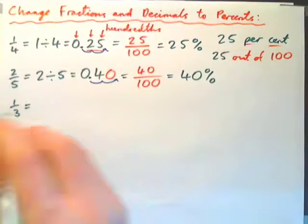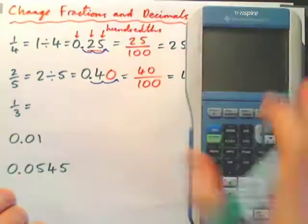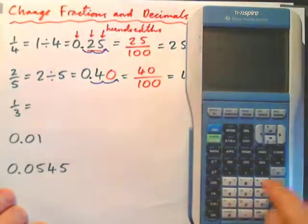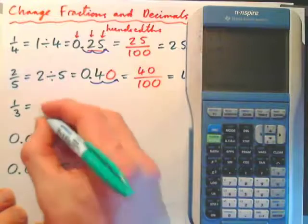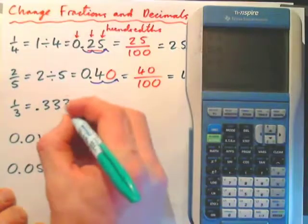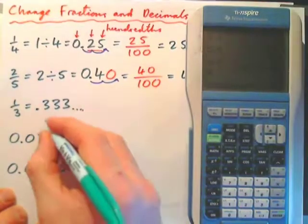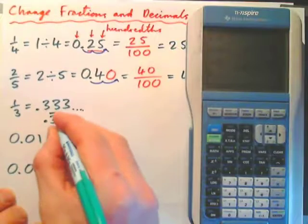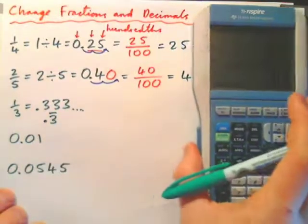One-third. Plug that into the calculator. One divided by three. That gives us point three, three, three, continuing, which is also written point three with a bar over the three to say continuing.